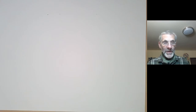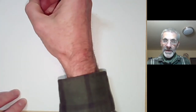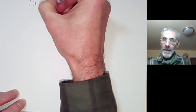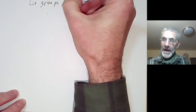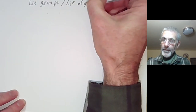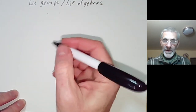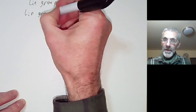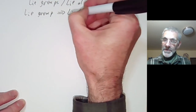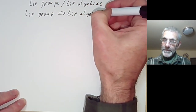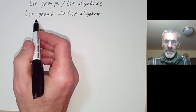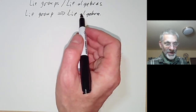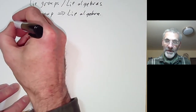This lecture is part of an online course about Lie groups and we'll be discussing the question of the relation between Lie groups and Lie algebras. In the previous lecture we showed that if you're given a Lie group you can get a Lie algebra. The question is how much of the Lie group does its Lie algebra actually capture? So for example we can ask the following questions.